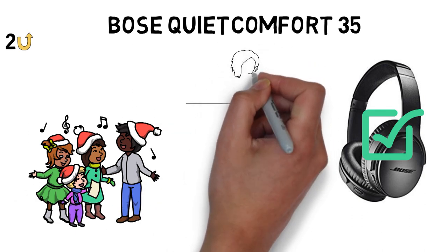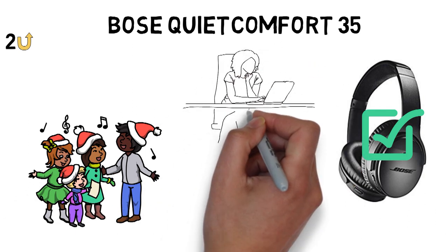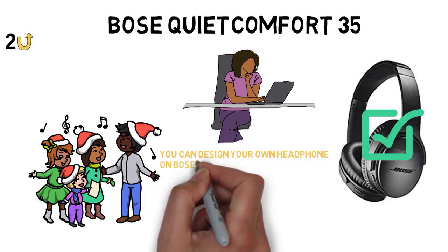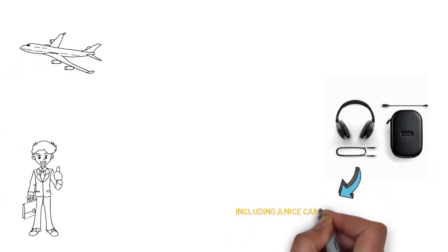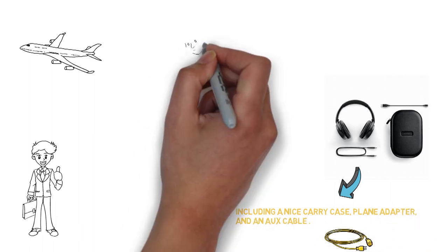If you're into customizing your cans to suit your personality, you can design your own headphones on Bose's website. The Bose QuietComfort 35 headphones also come with everything you'll need to take them on planes and around town, including a nice carrying case, plane adapter, and an aux cable for when you want to use them in wired mode.